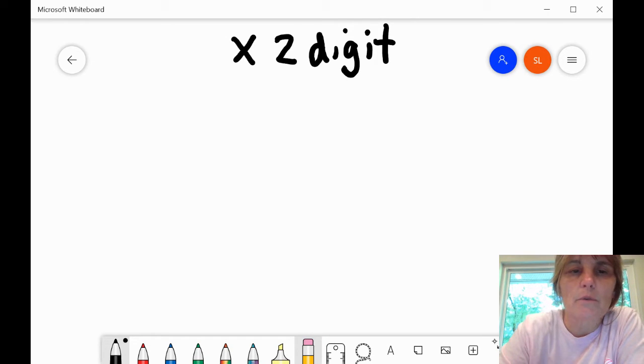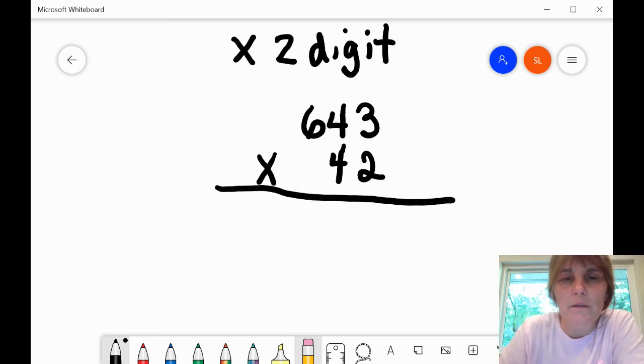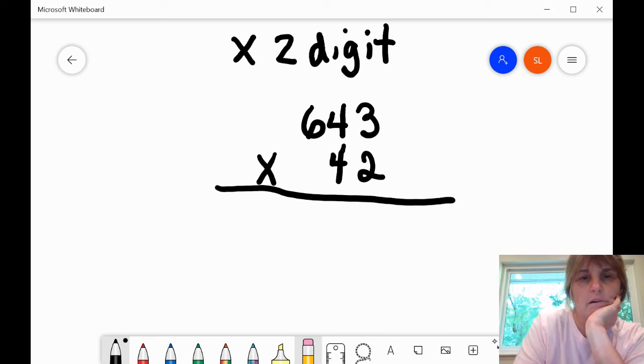So we're going to take the number 643 and we're going to multiply it by 42. Once again, make sure your numbers are neatly written and that the columns are organized so that they are on top of one another.